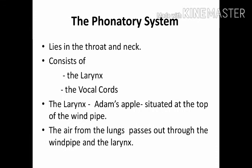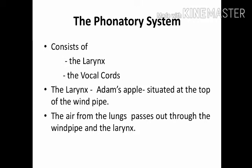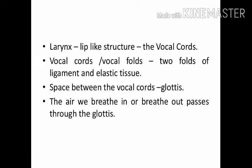The phonatory system lies in the throat and the neck, and comprises the larynx and the vocal cords. The larynx is situated at the top of the windpipe and is commonly called Adam's apple. The air from the lungs passes out through the windpipe and the larynx. Inside the larynx are situated two small structures which look like lips — they are called vocal cords or vocal folds. They are placed horizontally from front to back, attached in front and can be separated at the back. These vocal cords can be brought close to each other or moved far away from each other.